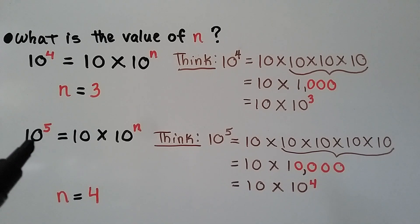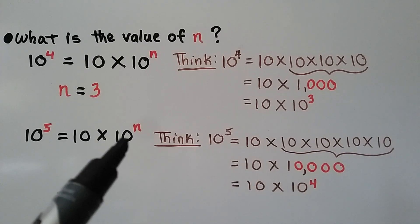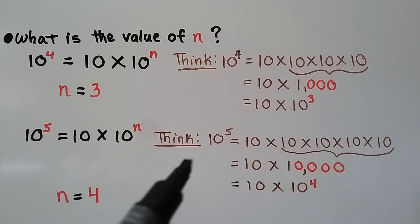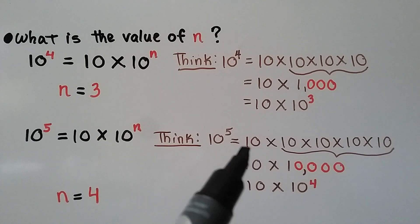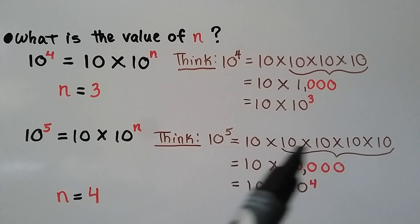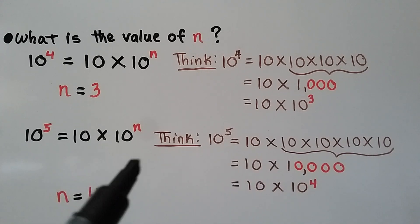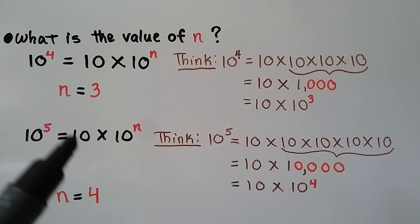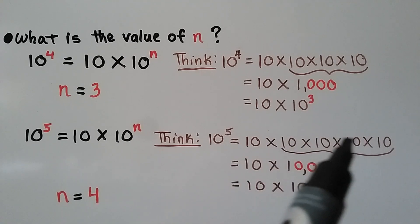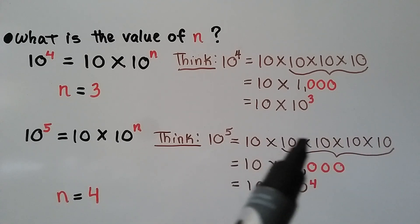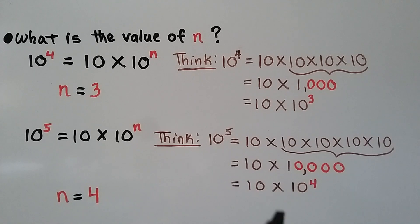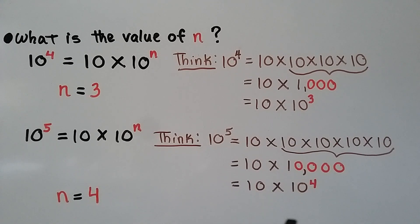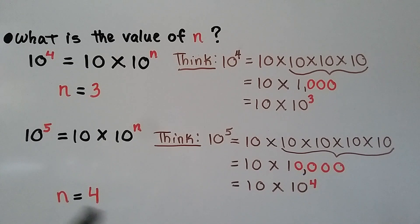Here we have 10 to the 5th power equal to 10 times 10 to the nth power. 10 to the 5th power would have 5 factors of 10. Not including the first one shown, we have 4 remaining factors of 10 — that's 10 times 10,000. With 4 zeros, it's 10 times 10 to the 4th power. So in this case, n equals 4.